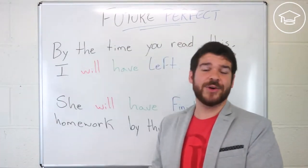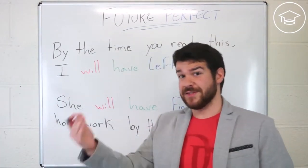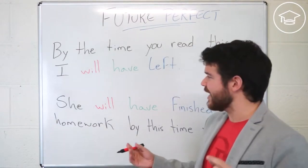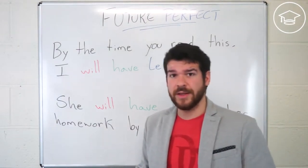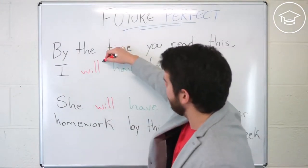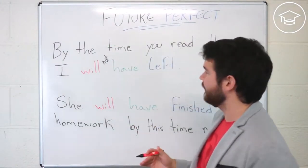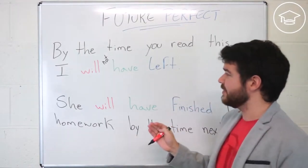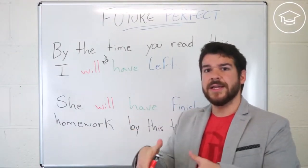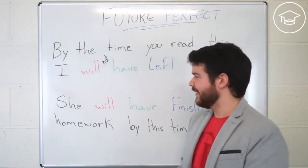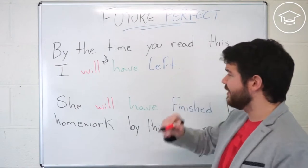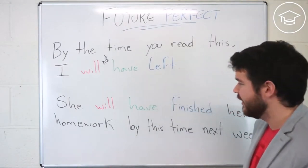The negative is pretty easy. You already know how to use 'will' plus 'not' — same thing. We just add 'not' after 'will.' So I will not, I won't. Let's say I will not have left. So by the time you read this, I will not have left. I will be still standing here. I won't have left by the time you finish reading this sentence.